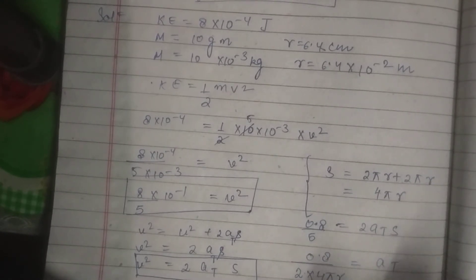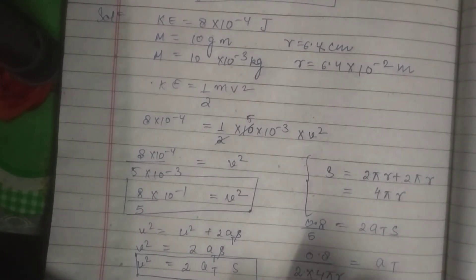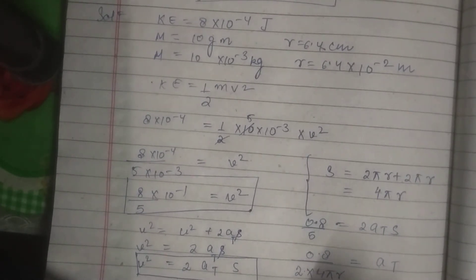And from here, we can get the value of a t is approximately 0.1 meter per second square.